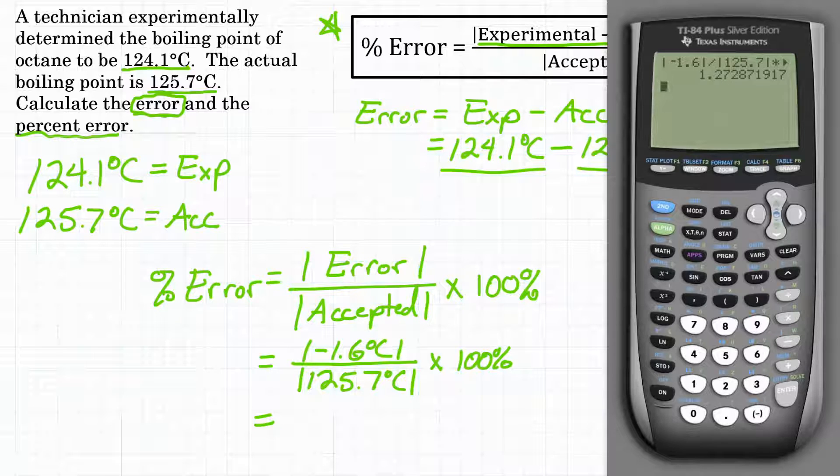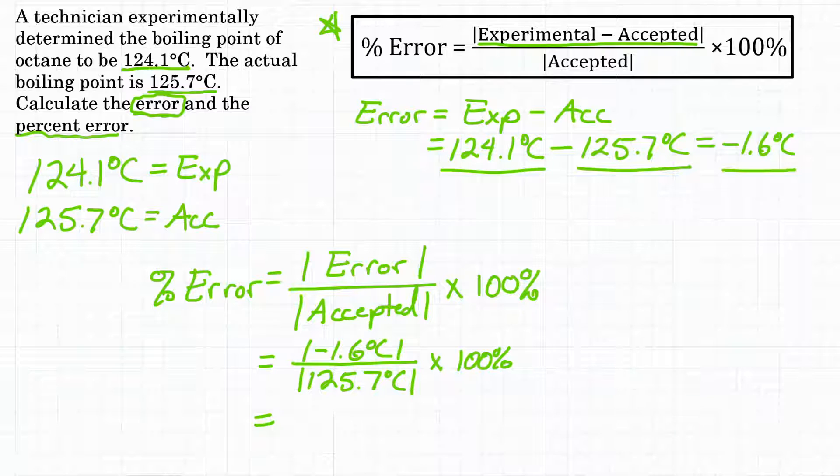And if you put this in your calculator, you should get positive 1.2728 with some numbers past that. Now we're just going to round to two significant figures. So we'll get 1.3 here for our answer.